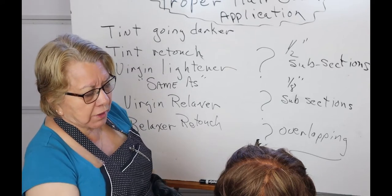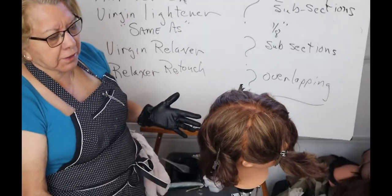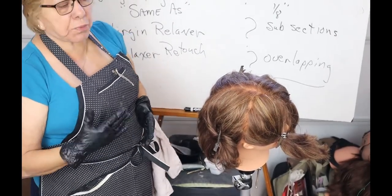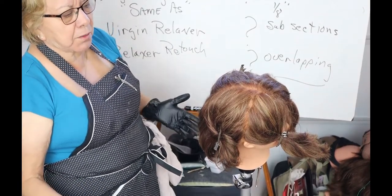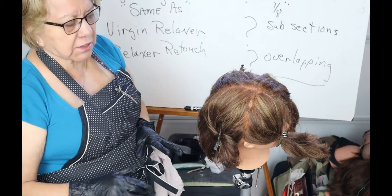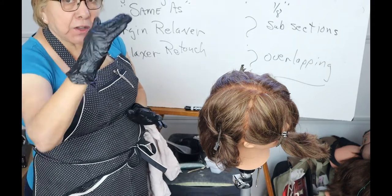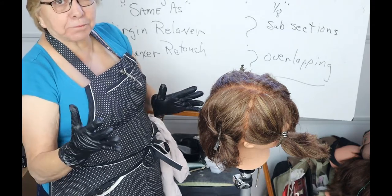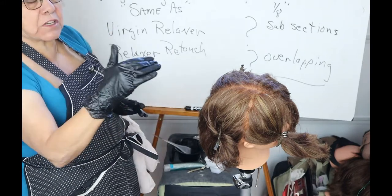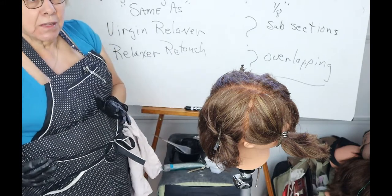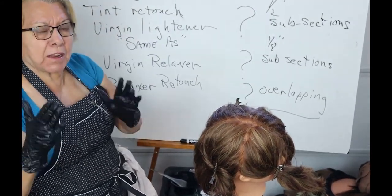For instance, this is a light brown mannequin — between a level five and a level six, meaning five or six levels lighter than black. When you go into a beauty supply and see those numbers on the tube, that's what they mean: you count up from black to see how many levels have been removed.